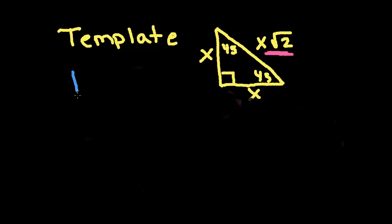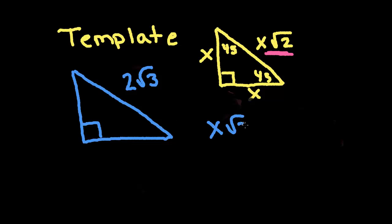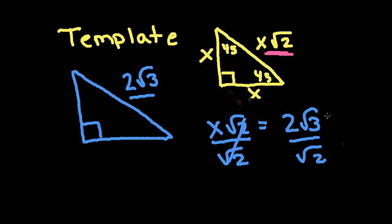And, just to get some practice with radicals, let's say that this one is 2 square root 3. So, we are going to say x square root 2, which is the side that it matches up with, is equal to 2 square root 3. So, again, we need to solve for x. So, we're going to divide by square root 2 on both sides. And so we have this.